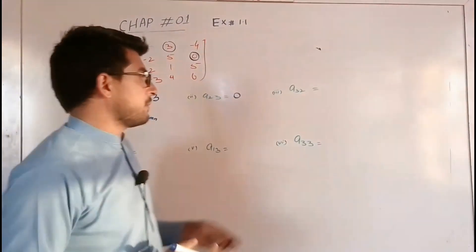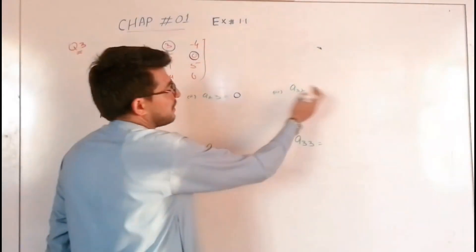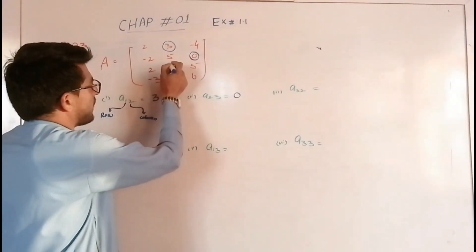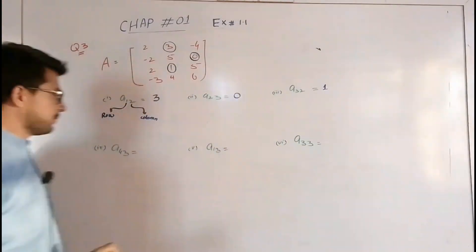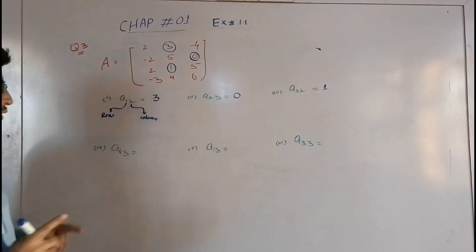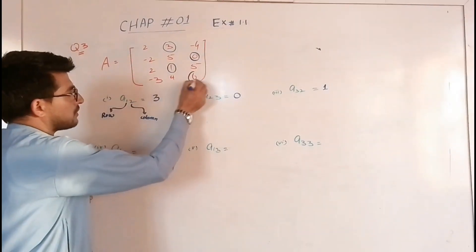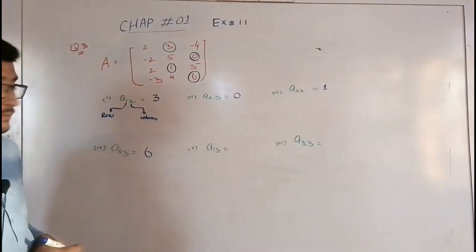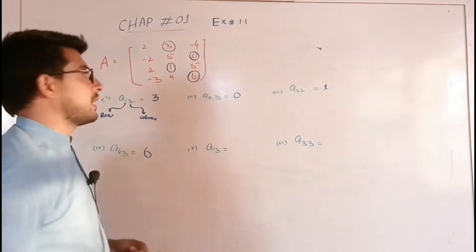A2,3 means row 2 and column 3. We are talking about element at row 2, column 3, which is the simple 6 number. The fifth element refers to row 1 and the third column.